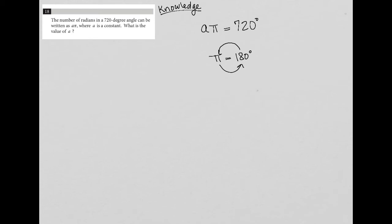So then that would mean that two pi is just two times that 180, which is 360 degrees.